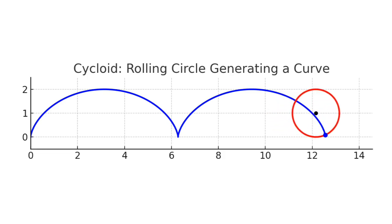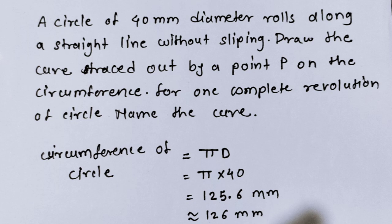In the question, the diameter of the circle is given as 40mm, which rolls along a straight line without slipping. Draw the curve traced out by point P on the circumference for one complete revolution. Remember, whenever the circle slides on a straight line, you have to draw a cycloid.